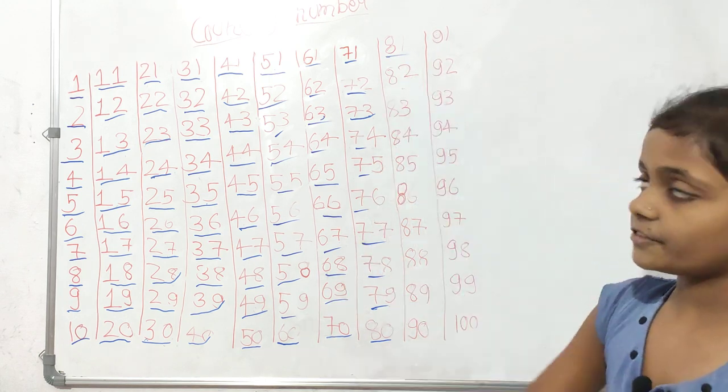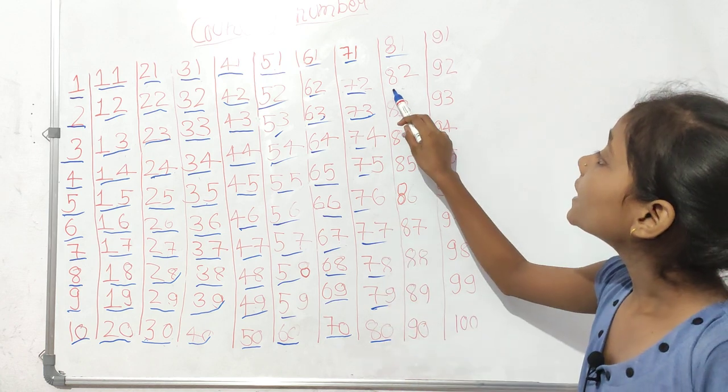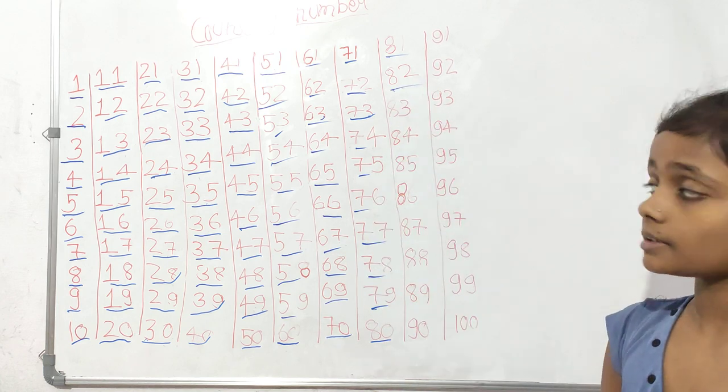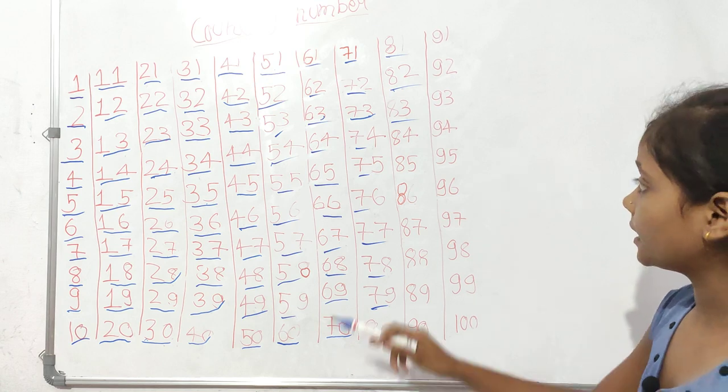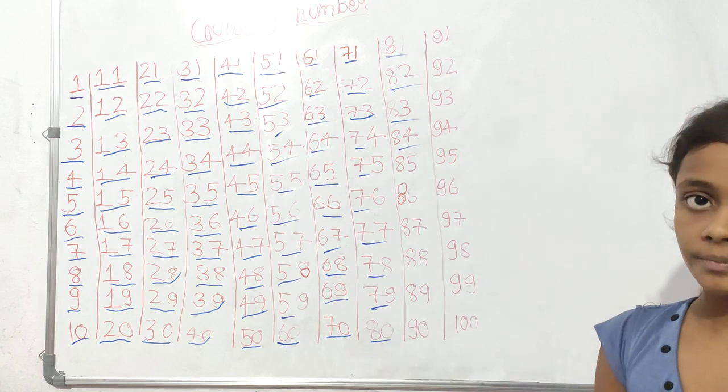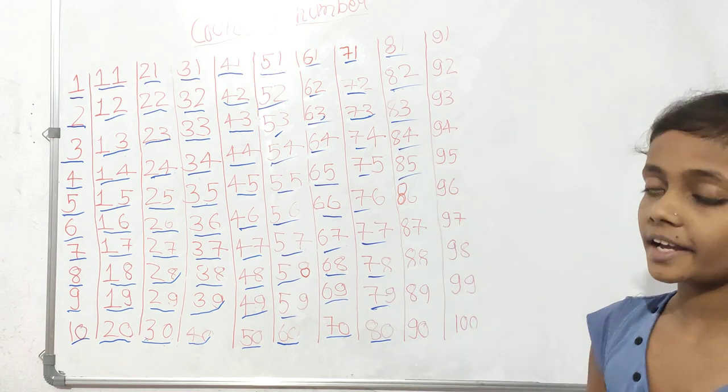Eighty-one, eighty-two, eighty-three, eighty-four, eighty-five, okay.